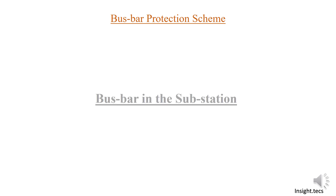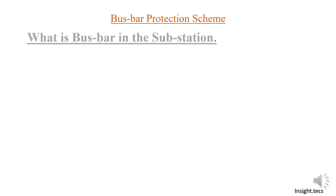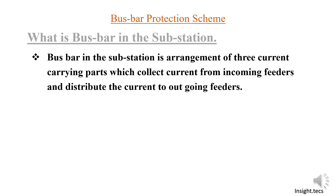In order to understand the bus bar protection scheme, first of all we will be learning about different types of bus bars — how bus bars are available in the substation and what types are there. A bus bar in a substation is an arrangement of three current-carrying parts which collect current from incoming feeders and distribute that current to the outgoing feeders. Basically a bus bar is like a junction where current comes from one direction and flows into another, and the bus bar provides that path for current to flow from one feeder to the other.